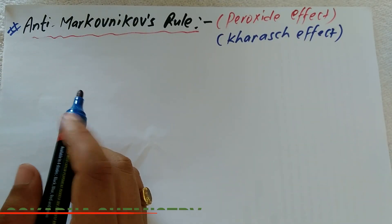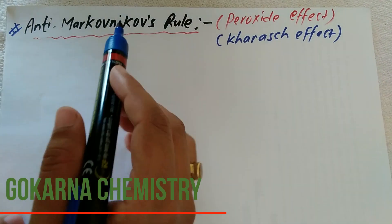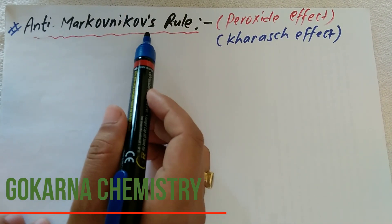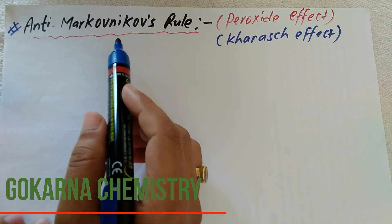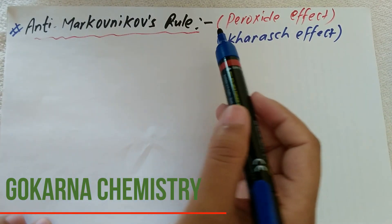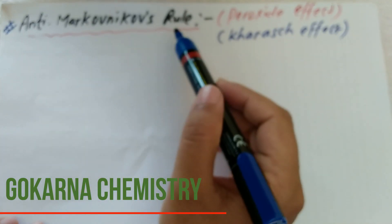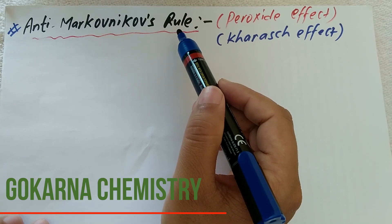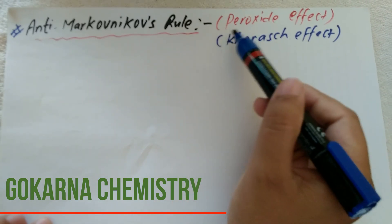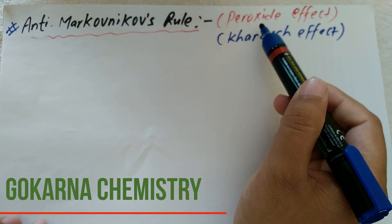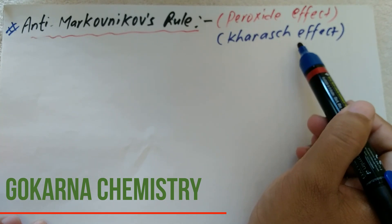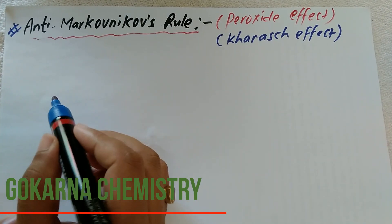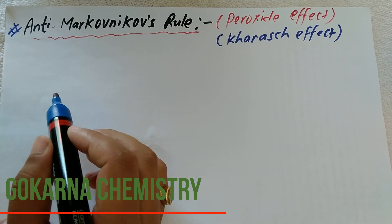Anti-Markovnikov's rule is opposite to Markovnikov's rule. In this rule, an organic peroxide is present, and so this rule is also called the peroxide effect or Kharasch effect.